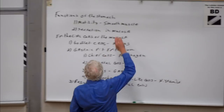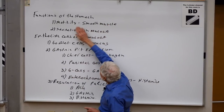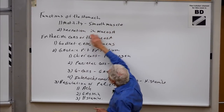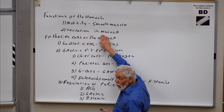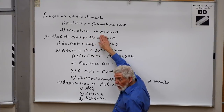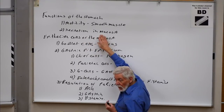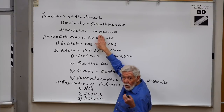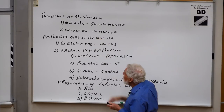When we think about the function of the stomach, there's motility from smooth muscle, but beyond that there's secretion from the mucosa. The mucosa is a complicated set of epithelial cells regulating the secretion of any number of molecules.